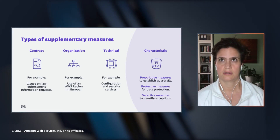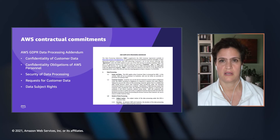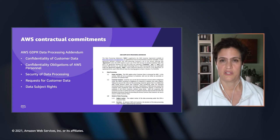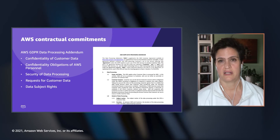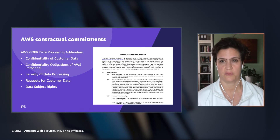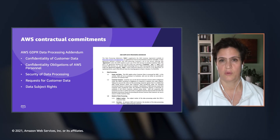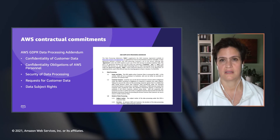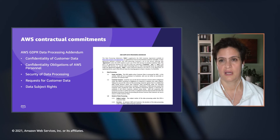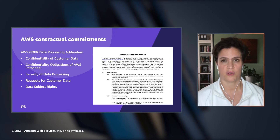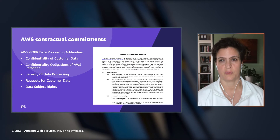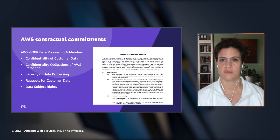On the contractual measures that AWS makes available, we have a data processing addendum, which covers the confidentiality of customer data, the confidentiality obligations of AWS personnel, and also the security of data processing. In addition, we have a supplementary addendum, which supplements the data processing addendum and focuses more specifically on requests for customer data from governmental bodies and also data subject rights.